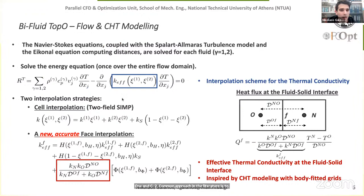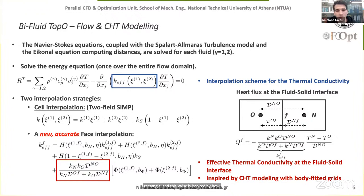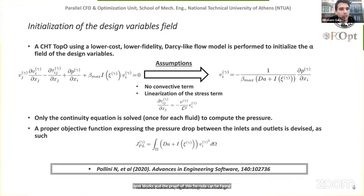We solve the energy equation over the entire flow domain, interpolating thermal conductivity values of the three involved media based on xi1 and xi2. A common approach is SIMP interpolation, but since we use the cell-centered finite volume method we need kappa values at cell faces. We propose a new interpolation of kappa at cell faces inspired by how temperature continuity and heat flux conservation are imposed in CHT simulations with body-fitted grids, ensuring accurate heat flux computation at the fluid-solid interface.